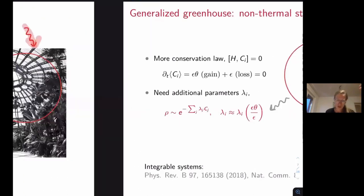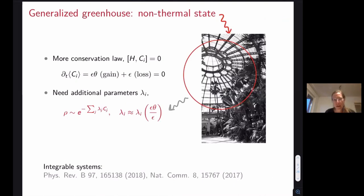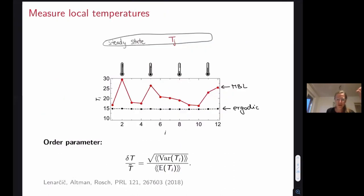Now what will happen when we have many conservation laws? Well, they will enter on the same level. So instead of a single temperature, we will need additional Lagrange multipliers or additional parameters, additional generalized temperatures to describe the state that will be now more like a generalized Gibbs ensemble.